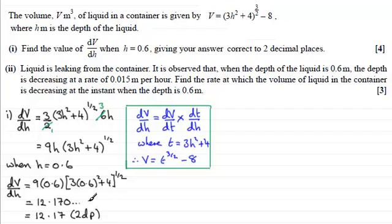Now, in part two, we're told that liquid is leaking from the container, and it is observed that when the depth of the liquid is 0.6 meters, the depth is decreasing at a rate of 0.015 meters per hour. And we've got to find the rate at which the volume of liquid in the container is decreasing at the instant when the depth is 0.6 meters. So again, if you'd like to have a go at this, just give you a moment to pause the video.